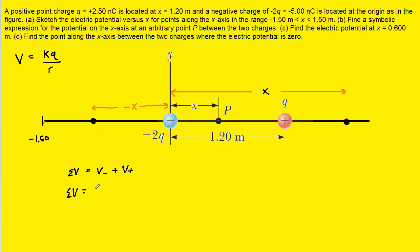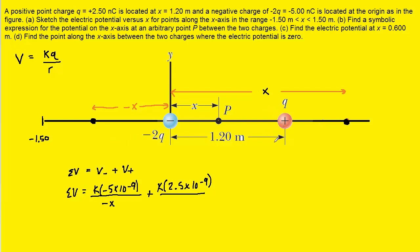For the negative charge, we have the constant multiplied by the value of the charge, which is negative 5 times 10 to the minus 9 coulombs, divided by the distance from that charge to this point, which is negative x. Then we add that to the potential produced by the positive charge — the constant times the amount of charge divided by the distance from that charge to this point, which is 1.2 minus x.